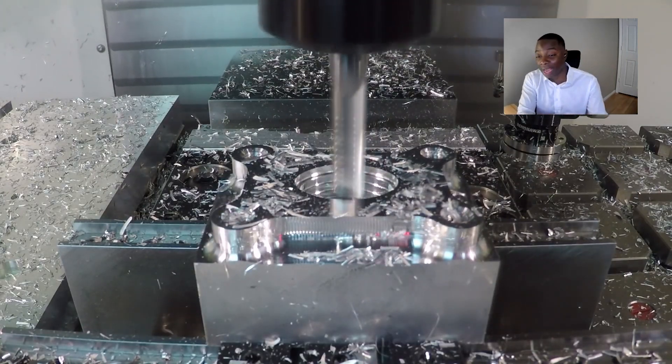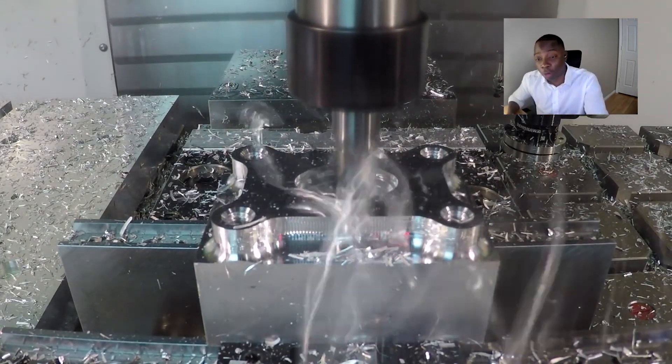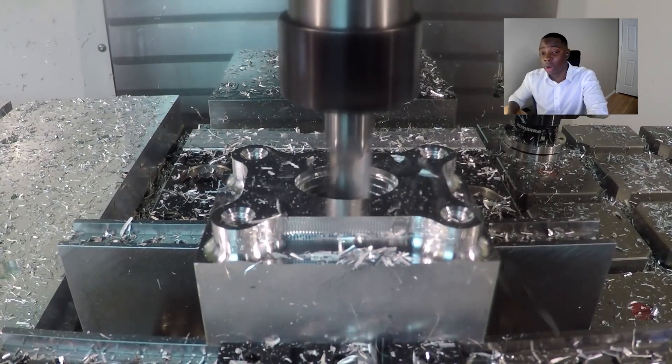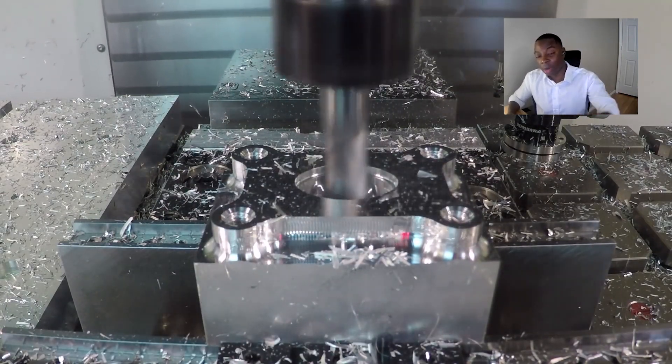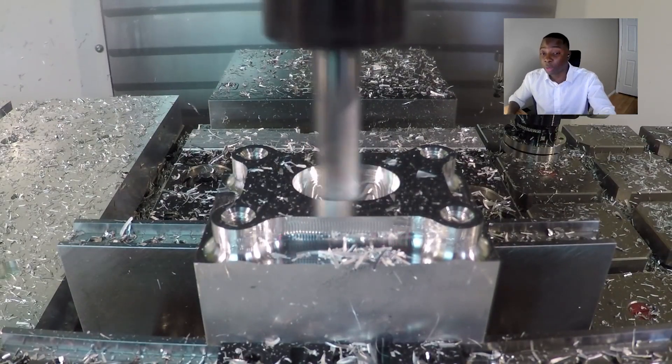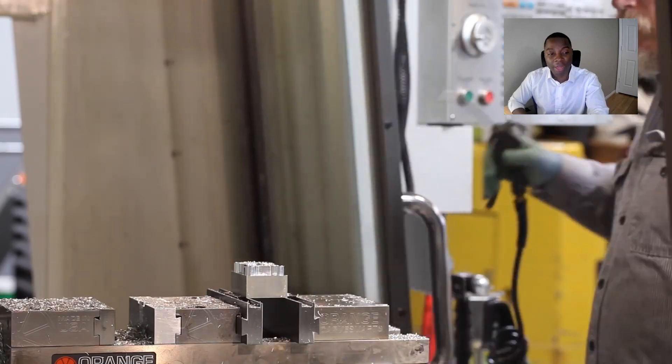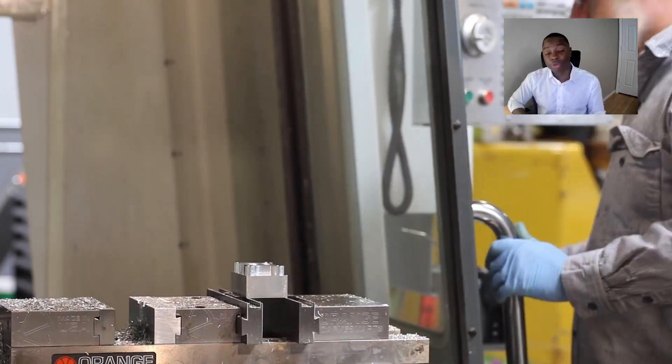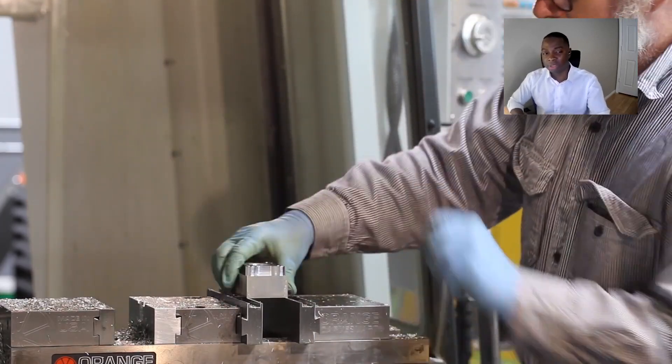moving it completely from casting to CNC machining. The result of that was dropping down Honeywell's production cycle for this particular component from 22 weeks to three weeks. That's seven times faster. And we were still able to offer them the quality that was required for that particular component.